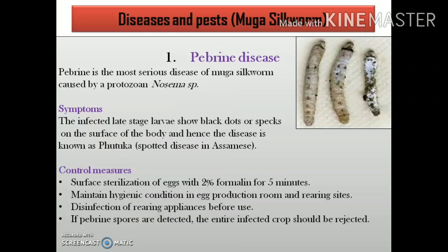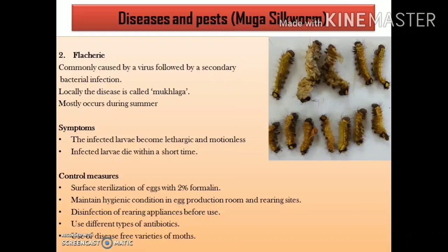Control measures for pebrine include surface sterilizing the eggs with 2% formalin for about 5 minutes just after they are laid. Disinfection of rearing appliances is also done, and proper hygienic conditions are maintained in the egg production room and rearing areas. If any pebrine spores or prior symptoms are detected in a crop, the entire infected crop should be rejected so the disease does not spread to nearby healthy crops.